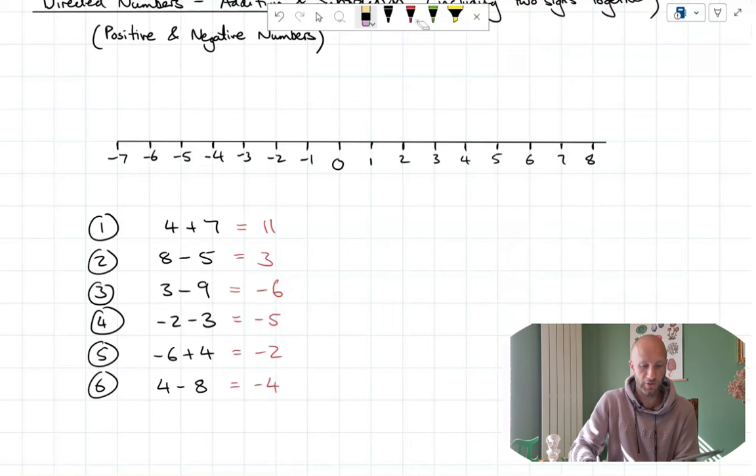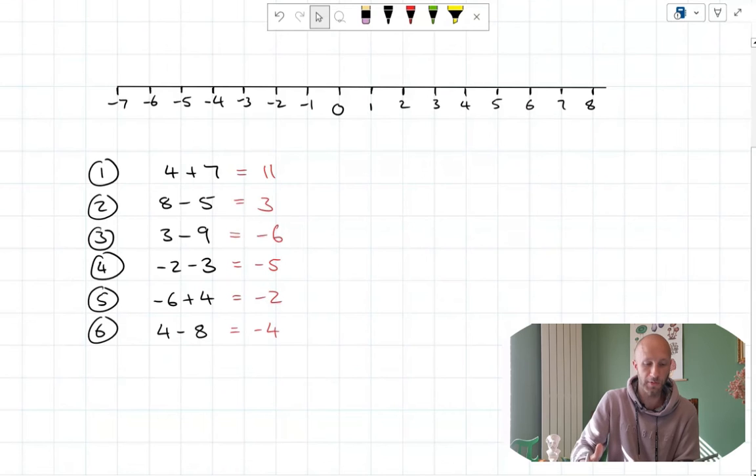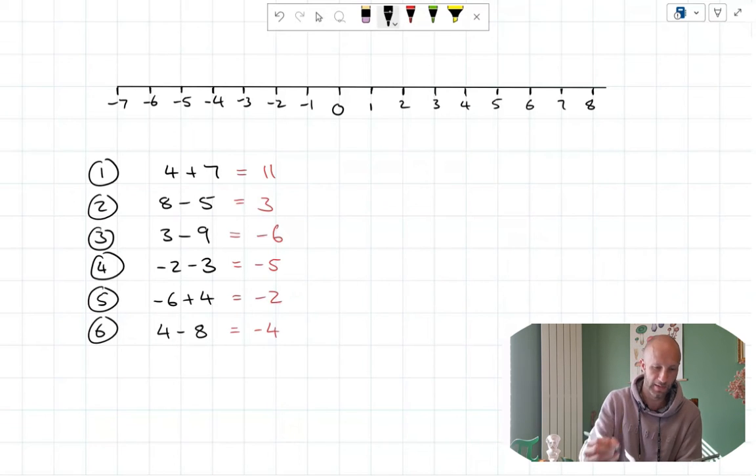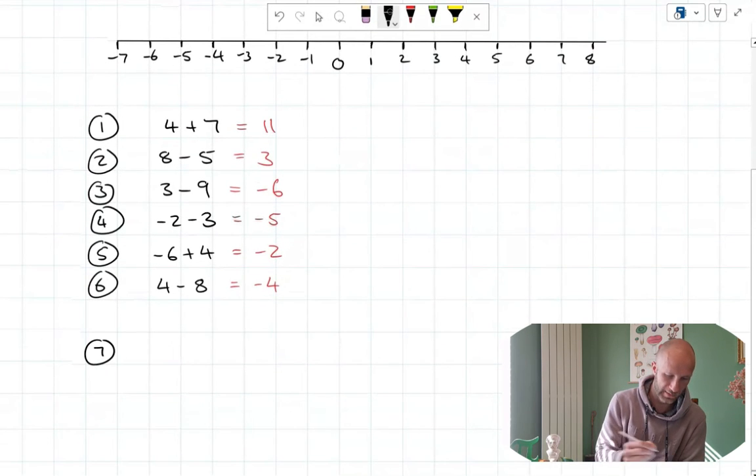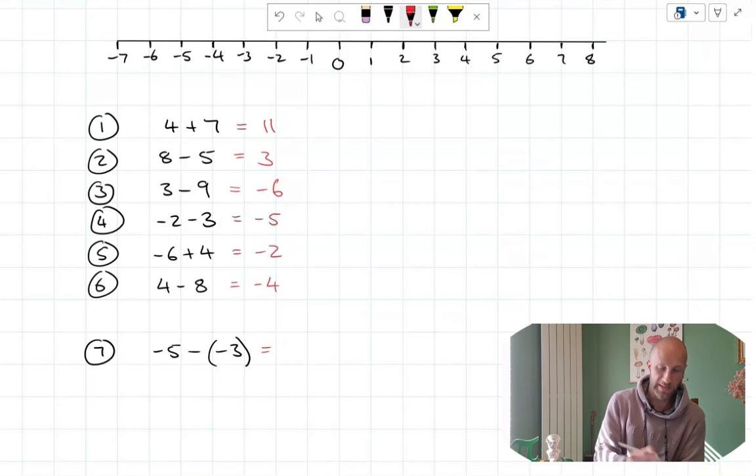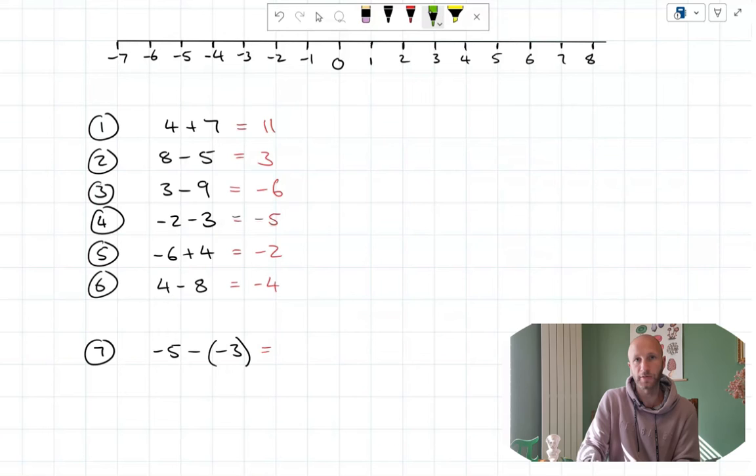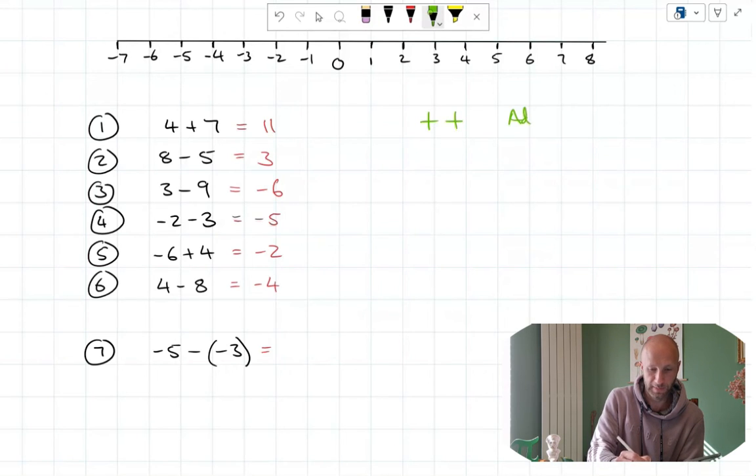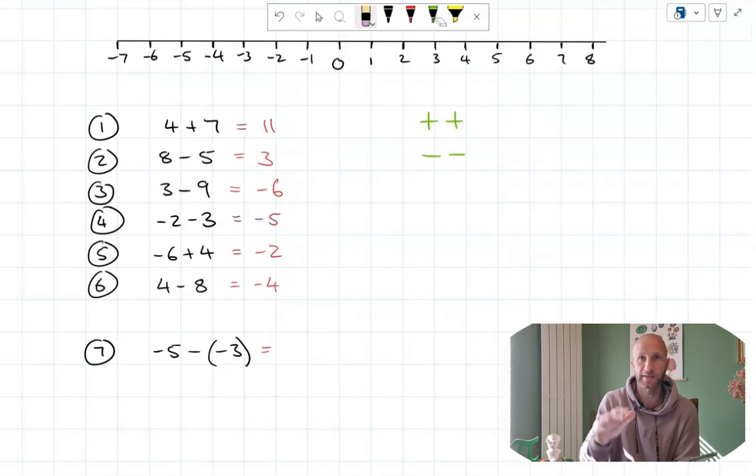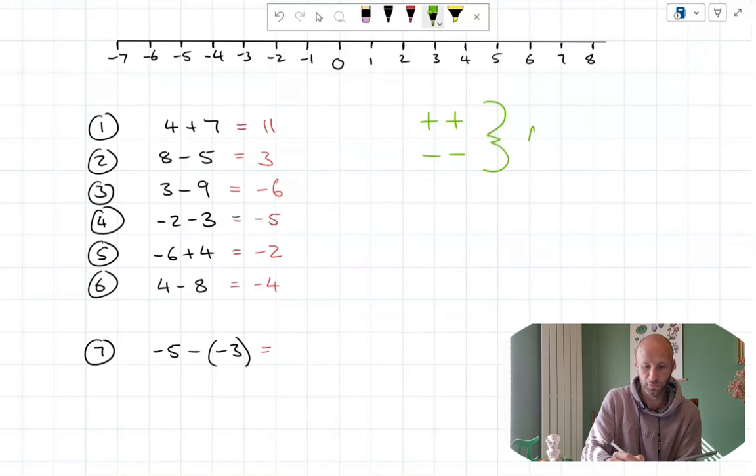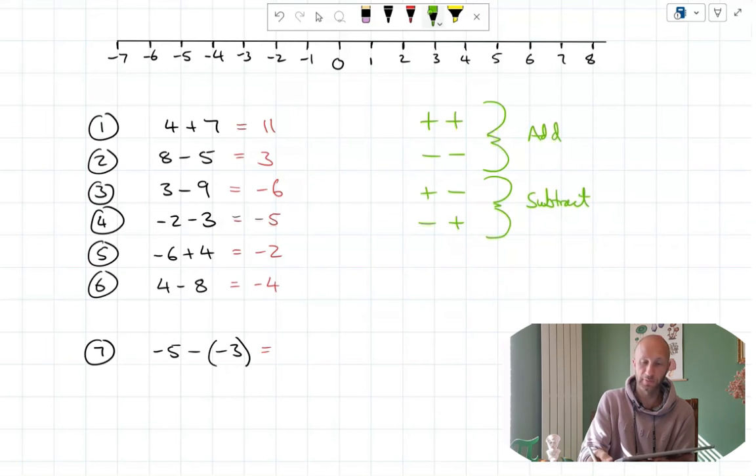But this also opens up a kind of question, which is, what happens if I want to add a negative number or if I want to subtract a negative number? How does that kind of work? So we'll have a little look at this as well. So again, this is where we're going to find two signs together. So if we have something like -5 - (-3), where does that leave us? The rules that I would learn is if you have two signs that are the same, that always means that we are adding. And you've got two signs that are different, this means that we are subtracting. So two signs are the same, we add; two different signs, we subtract.